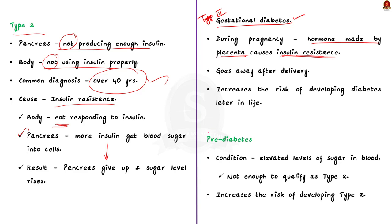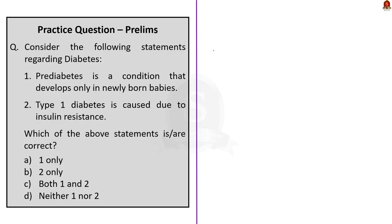Finally, pre-diabetes. Technically, it is not a distinct type of diabetes. It is a condition where a person has elevated blood sugar levels that aren't high enough to qualify as type 2 diabetes. Pre-diabetes increases the risk of developing type 2 diabetes. With this, we have seen all four different types of diabetes and understood the disease and its types.